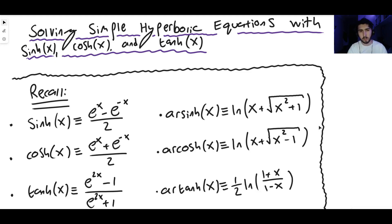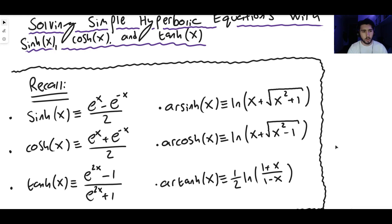We're not going to use any identities - we haven't looked at any identities yet. We're just going to be using sinh x equals something, cosh x equals something, tanh x equals something, and solving those using the inverse functions. Let's recall that sinh x, cosh x and tanh x all have those definitions as we can see, and arsinh, arcosh and artanh have these definitions right here - the definitions of the inverse hyperbolic functions, which we're going to need to use today.